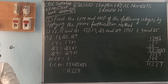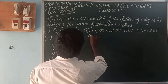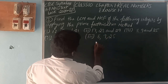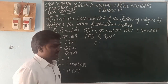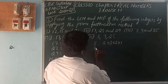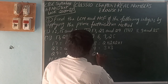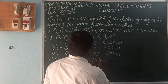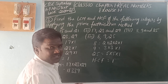Third problem: numbers are 8, 9, and 25. We divide 8 by 2: so 8 = 2 into 2 into 2. 9 = 3 into 3. 25 = 5 into 5. Here there is no common prime factor among all three. So HCF is 1.